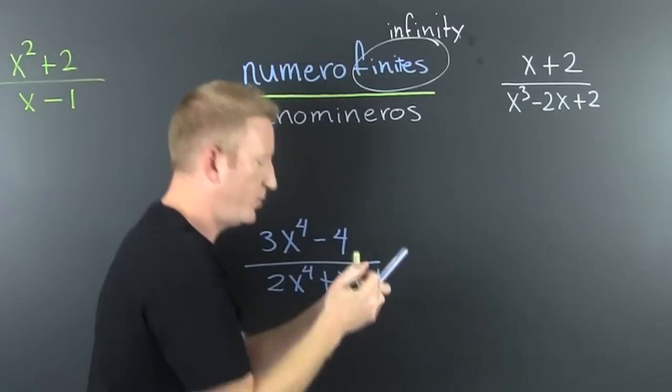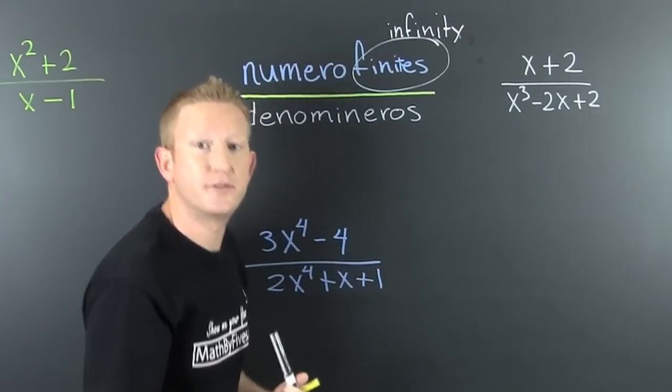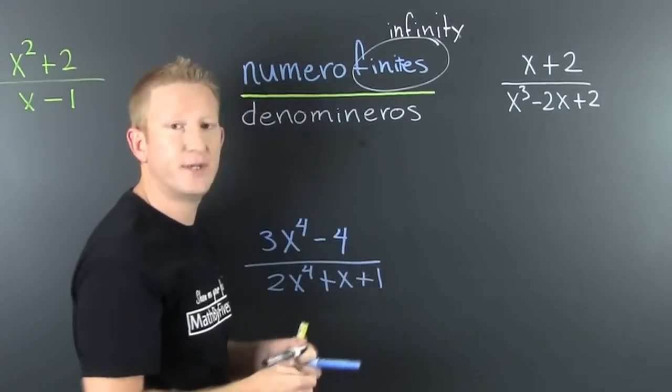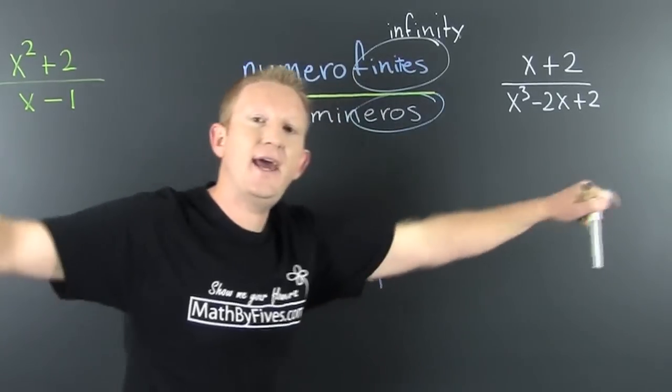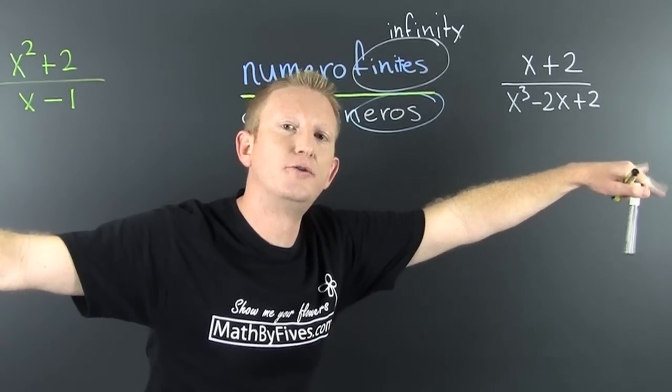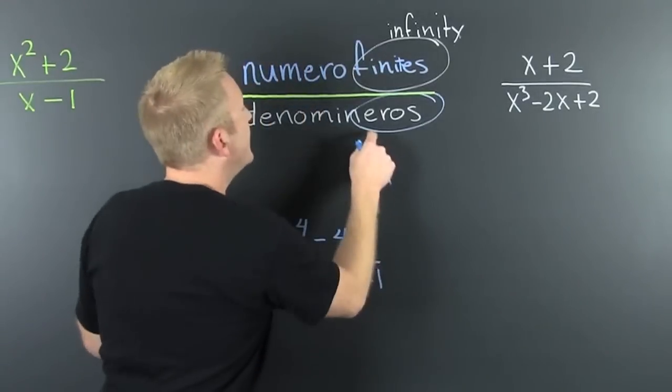If the denomineros win, if the degree of the denominator is larger, then the asymptotes, the end behavior, all behave and go to zero.